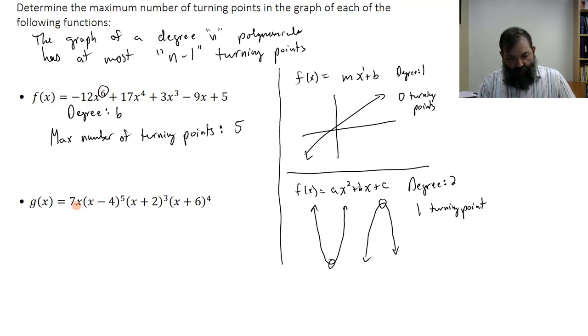If I were to multiply out that (x - 4)^5, I'm not going to multiply that whole thing out, but that would give me an x^5 term and then some other terms.